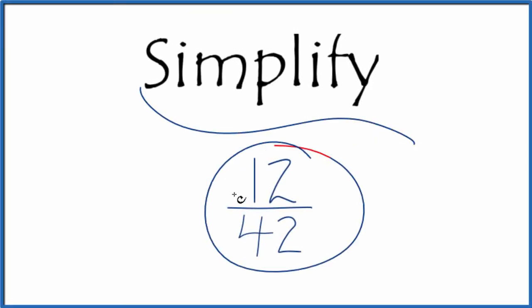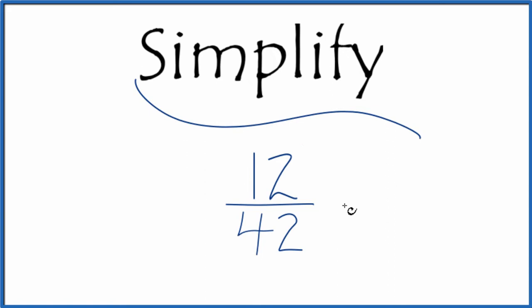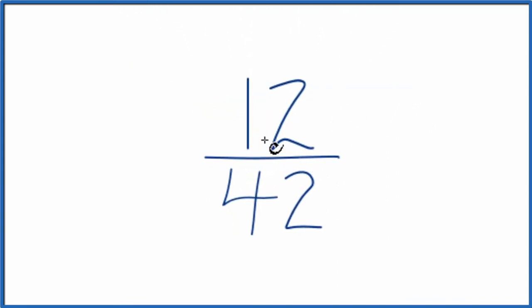Let's simplify the fraction 12 over 42. What we want to do is find another fraction that has the same value, an equivalent fraction to 12 over 42. We just want it in lowest terms.